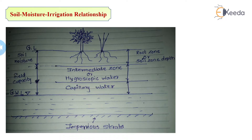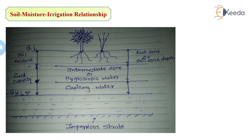Water which is below the ground water level is termed as ground water. The water which is available above the ground water level is known as soil moisture. A certain amount of water available above the ground water level cannot flow under gravitational action — it retains at the soil surfaces. Hence it is called soil moisture. The amount of water present in the soil is known as soil moisture.